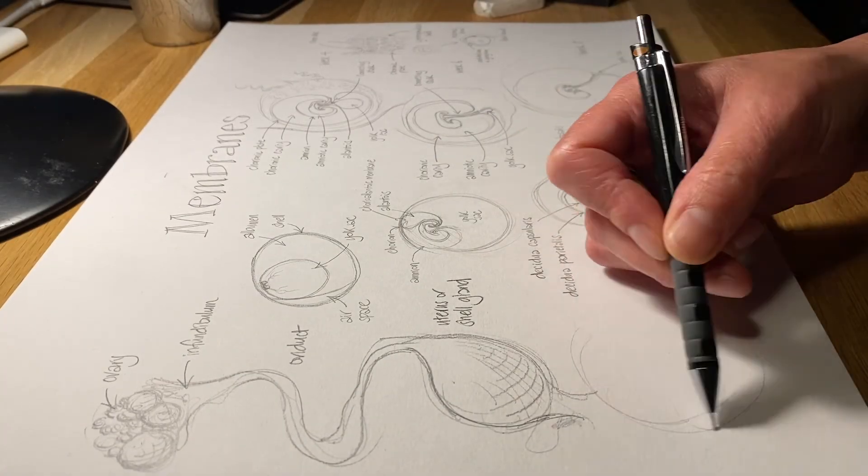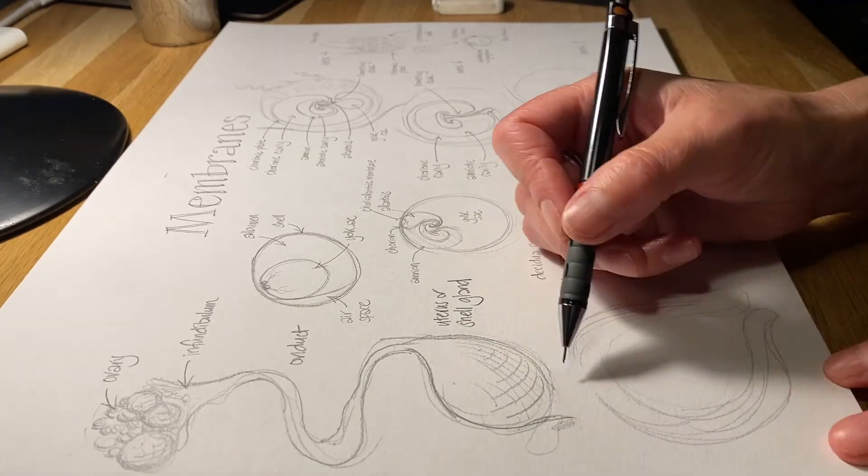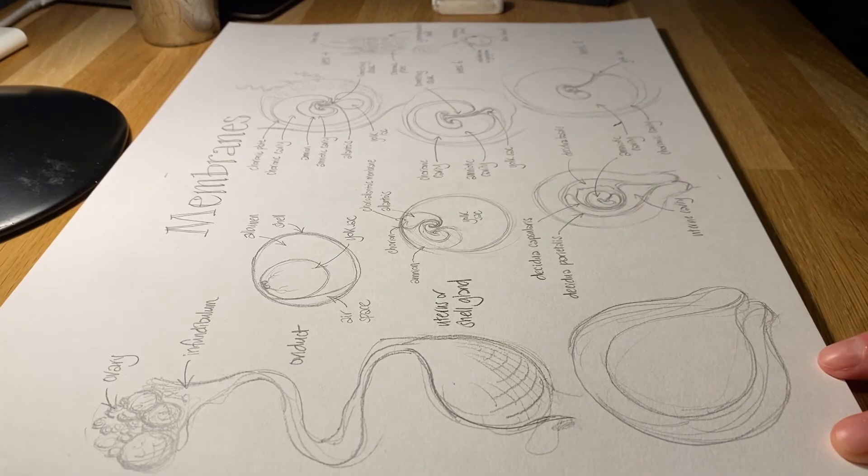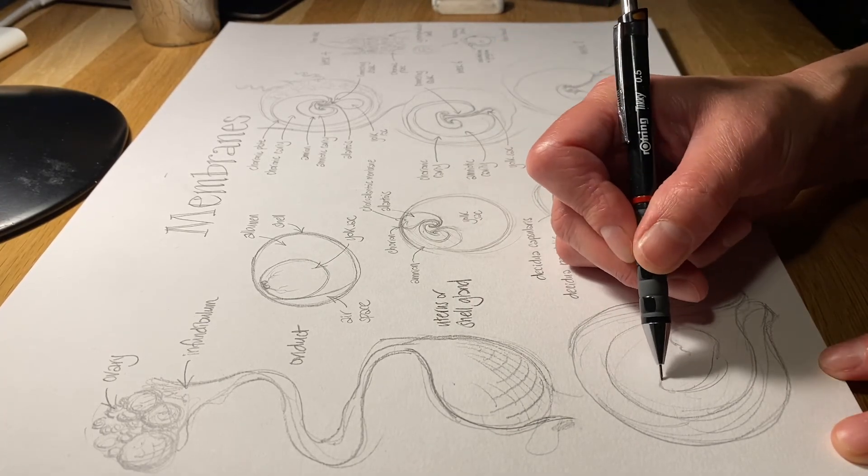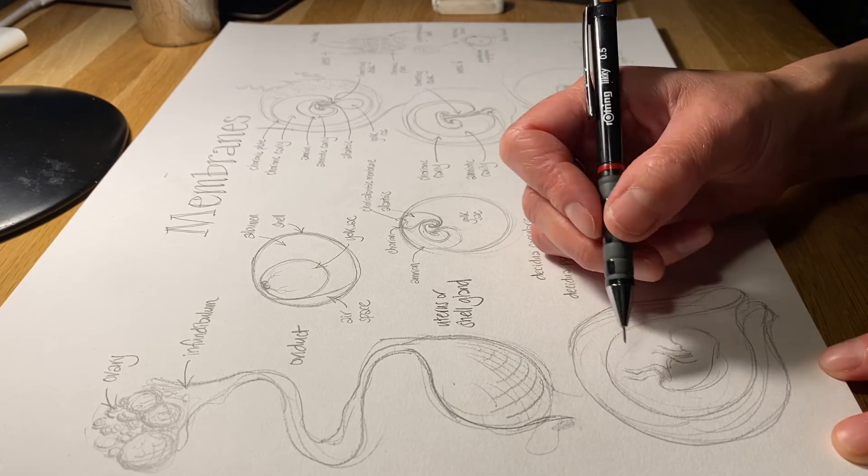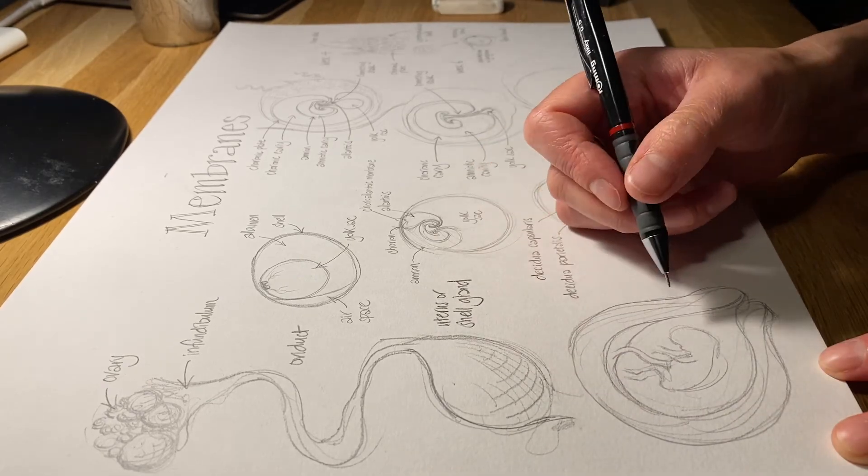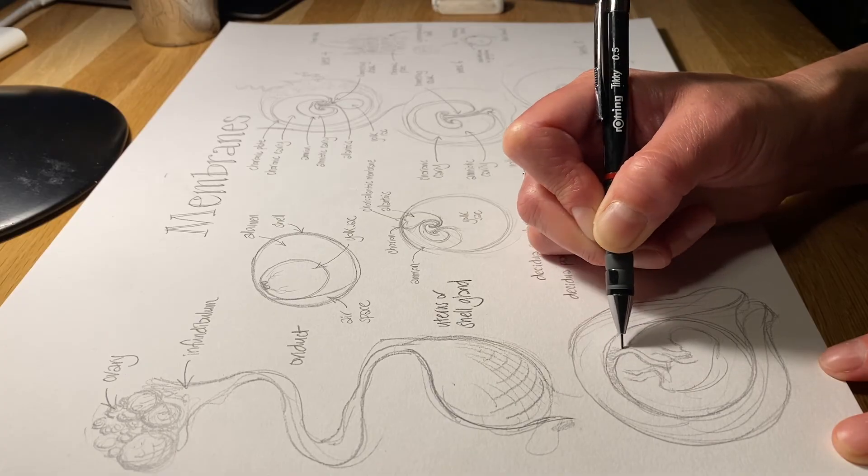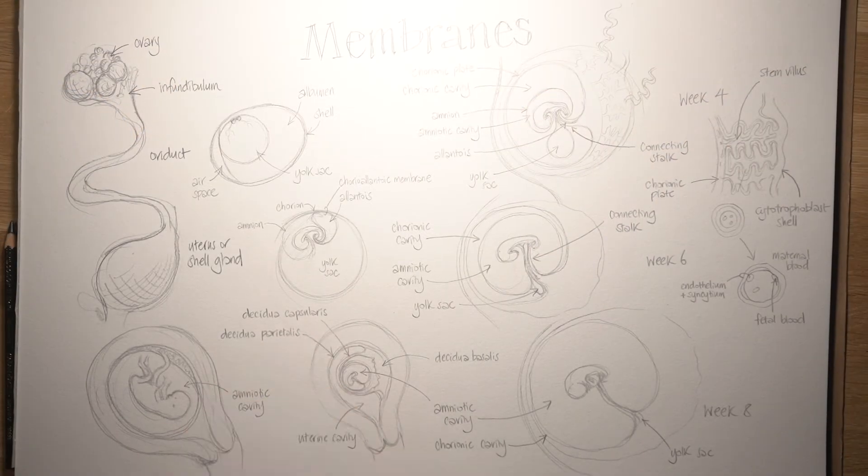Moving on another month, so to the end of the 12th week of development, everything is growing. The uterus itself has increased in size. The fetus, we now call it a fetus because we're past week eight, has increased in size and it's got decent little arms and legs and fingers and toes and lots of organs inside it. We can see that the amniotic cavity now is really the only cavity that's left. It's expanded, it's obliterated the chorionic cavity completely.